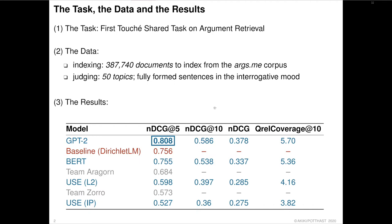As for the results, ours are highlighted in blue, with the baseline highlighted in red, and other close participants in grey. Our winning GPT-2 based approach outperforms the baseline by nearly 7%, and our second best BERT-based approach manages to tie the baseline. In terms of statistical relevance, I'd venture to say that it's a perfect tie.